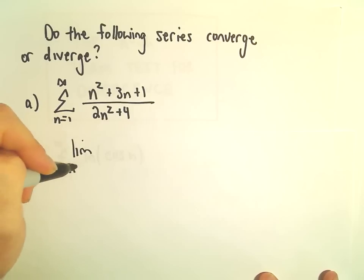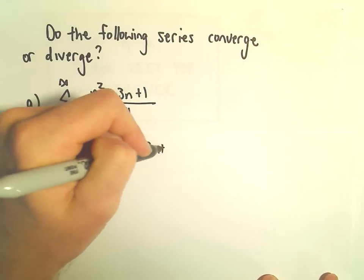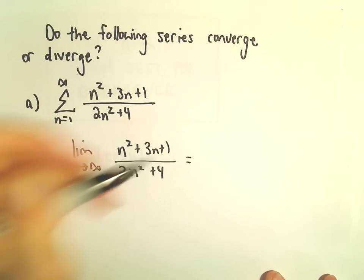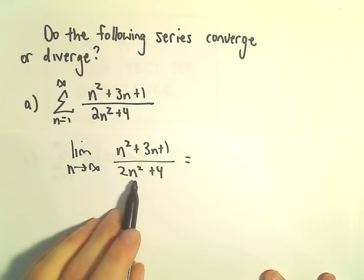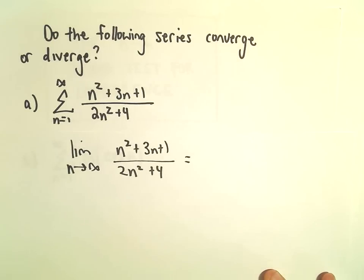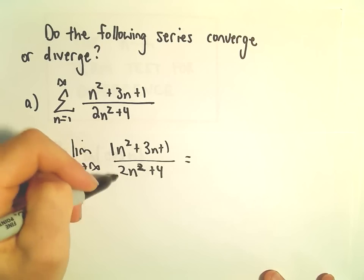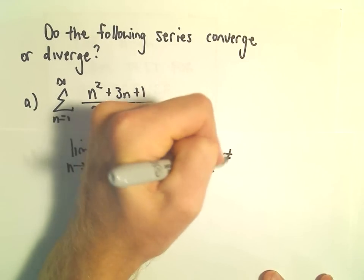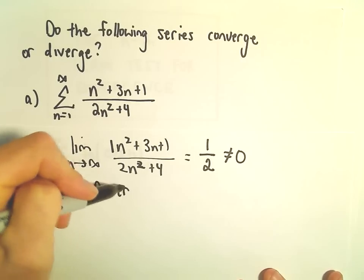Well, if we take the limit as n goes to infinity of n squared plus 4, we've seen these types of limits. If the degree of the numerator is equal to the degree of the denominator, which it is in this case, we can just use the ratio of the leading coefficients. So in this case, the limit will equal 1 half, which is definitely not equal to zero. And that tells us that the series is divergent.